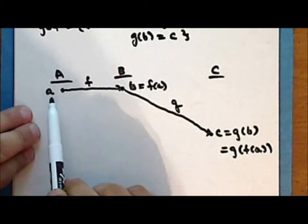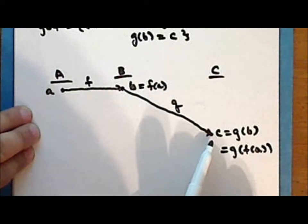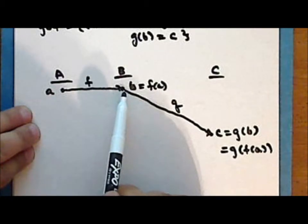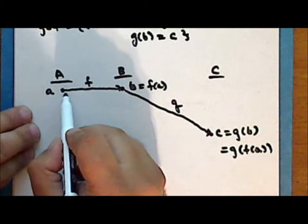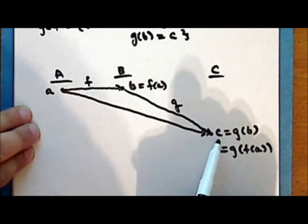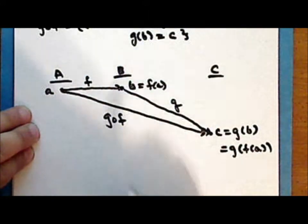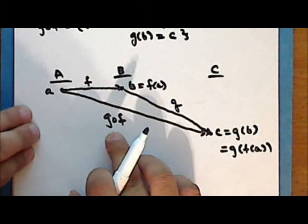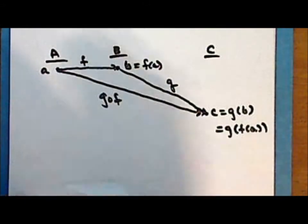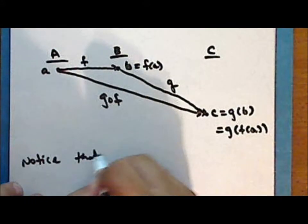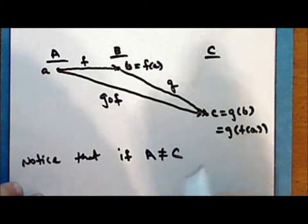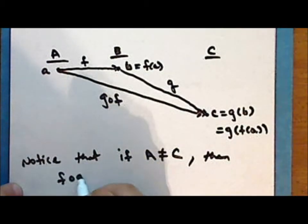Notice that the map from set A into set C can be accomplished in a two-step process: first applying map f, mapping that element into set B, and then applying function g, mapping into set C. This can be accomplished by a single function — the composition g∘f. Notice that the order of the functions in the composition matters: the function on the right is applied before the function to its left. In particular, if the domain of f is not equal to the codomain of g, then the composition f∘g is not defined.